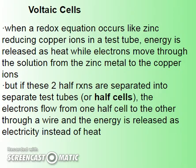But if you separate these two half reactions into what we call half cells, the electrons would flow from the more reactive metal over to the less reactive metal or ions through a wire, and that would generate electricity as electrons move through the wire rather than just releasing the energy as heat.